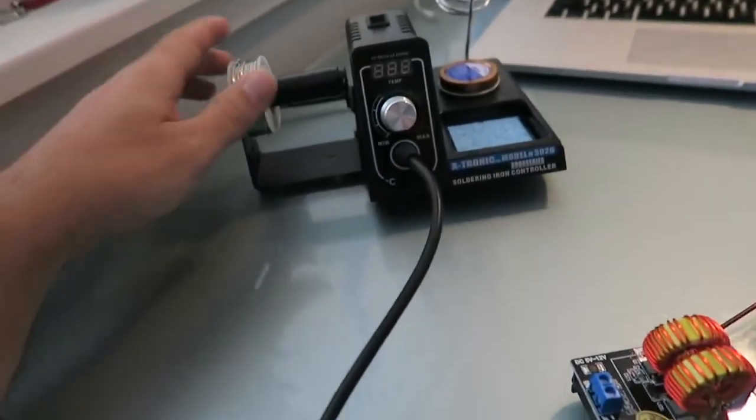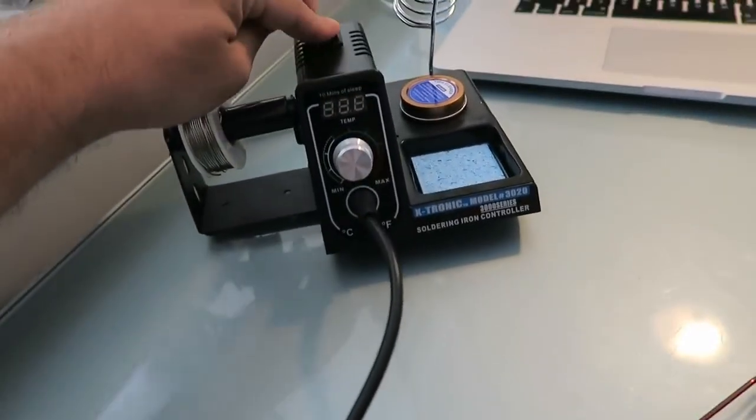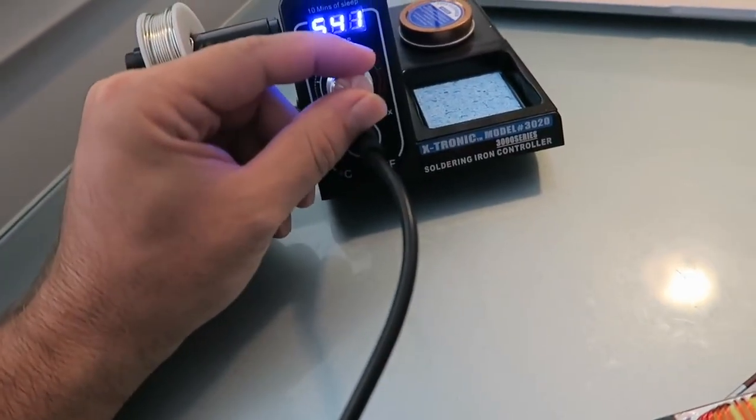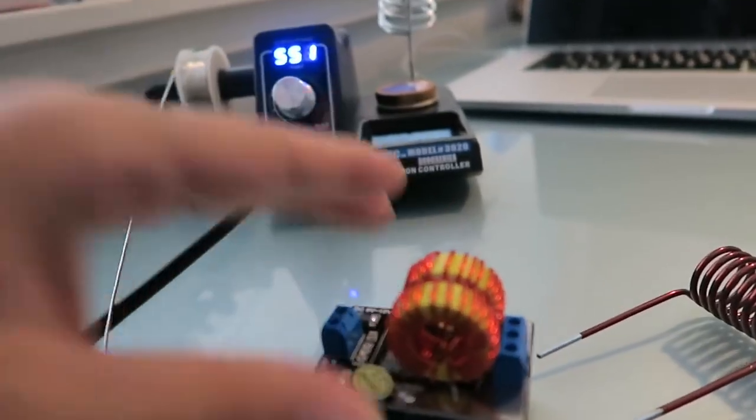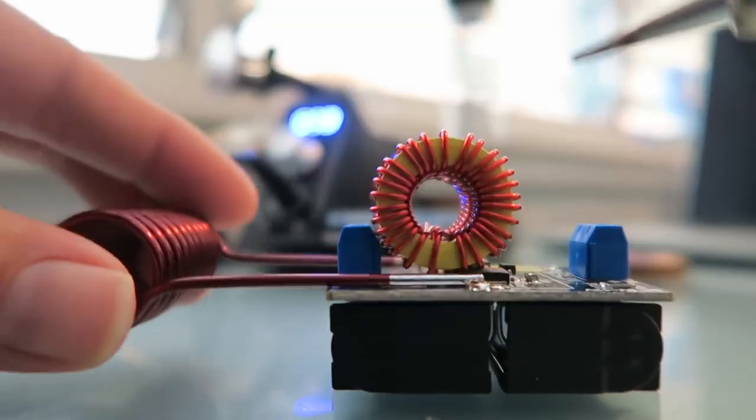All right so we broke out the soldering iron here. Let's turn it on. I don't know what temperature I need. I don't know, 550 is probably fine. And we'll add some solder to here and then we'll put the coil on. I don't think it really matters which way it goes.